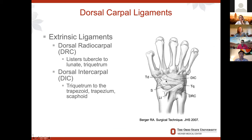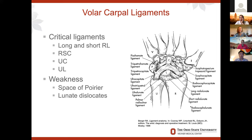Moving on to the volar carpal ligaments: these include the long and short radiolunate, the radioscaphocapitate, which traverses as an arc almost to the mid-portion of the wrist, the ulnocapitate, and ulnolunate ligament. There is a weakness between the capitate and the lunate called the space of Poirier, and this is where the lunate could potentially dislocate — a space of weakness.